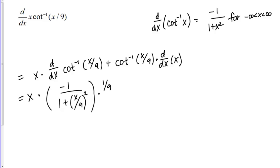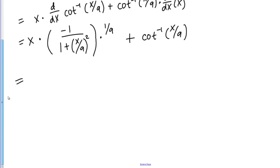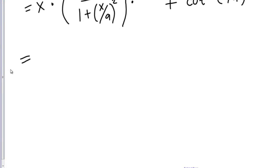Then if I continue, plus inverse cotangent of X over 9 times the derivative of X, which is just 1. We finished actually taking the derivative at this point, but we can clean up our answer a good bit here within this first term. Let's work on that.